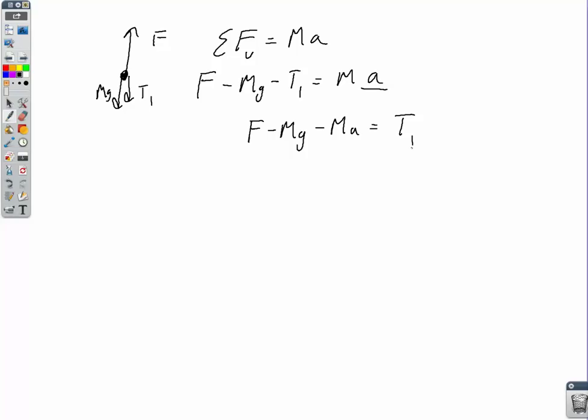And doing the same thing maybe for the bottom block to solve for T2, free body diagram for the bottom block. We have T2 pulling up and we have big MG pulling down and that's it. So now the net force acting on that bottom block is going to equal its mass times its acceleration. Remember the acceleration is the same for both. And we would get then T2 pulling up minus big MG is equal to big M times A. And then solving for T2, we have this expression, big M A plus big M G is equal to our T2.